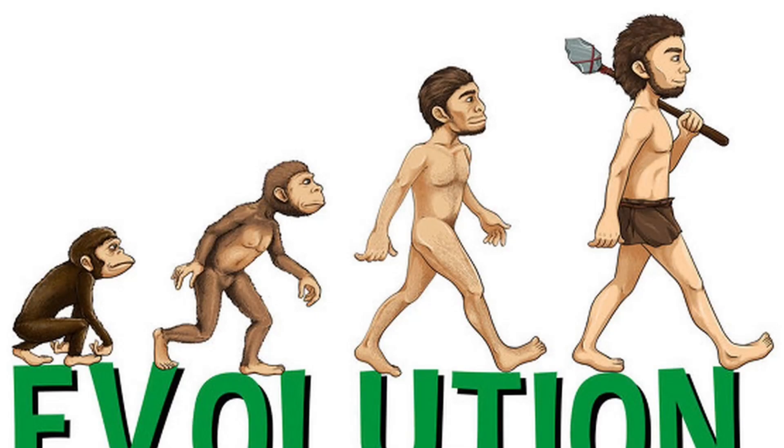Oceans: as Earth's surface cooled further, water vapor in the atmosphere condensed into liquid water, forming the oceans. Earth has continued to evolve and change over billions of years.